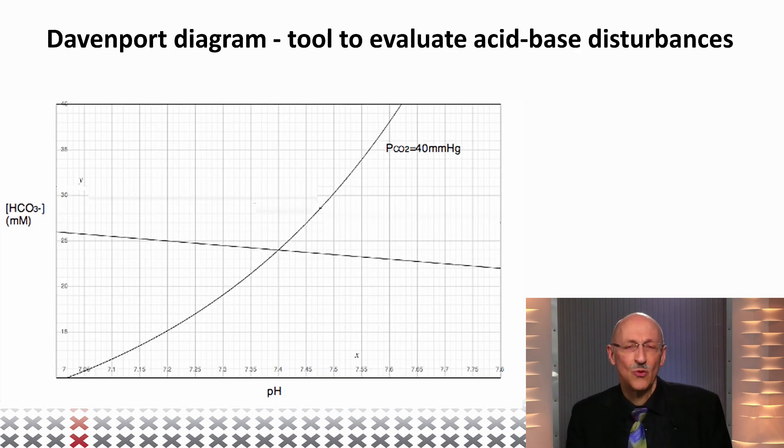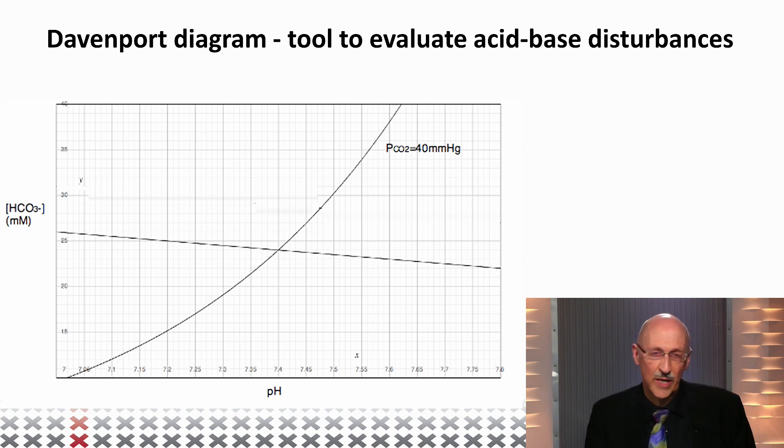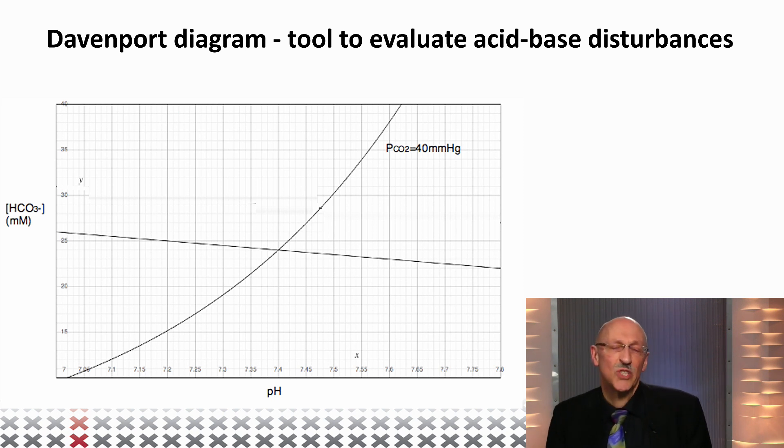OK. What is a good way to envisage what is actually going on? For that, we have the so-called Davenport diagram. And in the Davenport diagram, we look at the way the carbonate concentrations in the blood and the amount of CO2 that is exhaled, so that is thrown out into the environment, influence blood pH. And here you can see that at a normal rate of CO2 exhalation, so that's 40 millimeters of mercury, you have a normal blood pH of about 7.4.